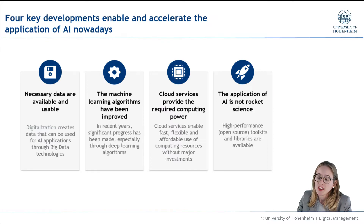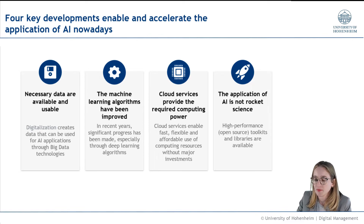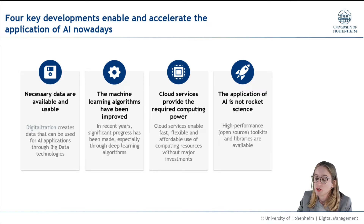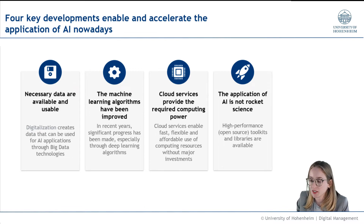There are basically four key developments that enable and accelerate the application of AI nowadays. First, digitalization enables us to have more data — the necessary data which is available and usable for AI algorithms. Second, machine learning algorithms have been improved overall over the last couple of years.